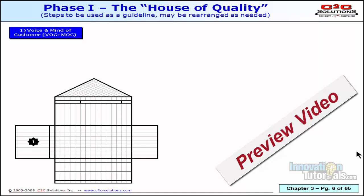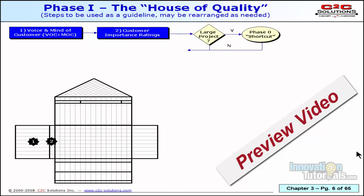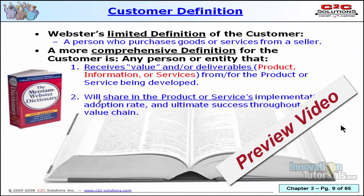The first step is the voice of the customer. The second thing you do is the importance rating. Now, depending on how large your project is, you might stop here and refocus. There's a shortcut we'll show you a little later for when you get a large list of requirements. But assuming the list of requirements is a manageable amount, the next main step would be to do the customer perception rate and ultimate success throughout the value chain.